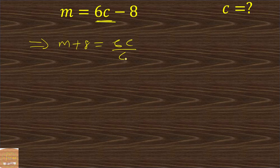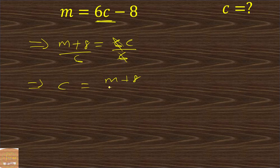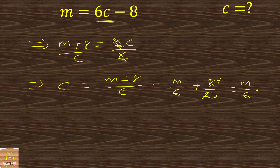We divide both sides by 6, giving c equals m plus 8 over 6, or equivalently m over 6 plus 8 over 6. You can simplify 8 over 6 to 4 over 3, giving c equals m over 6 plus 4 over 3. You can leave it in either form.